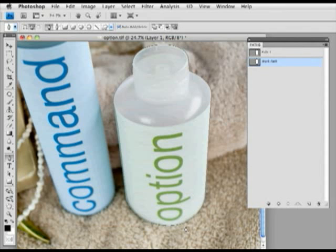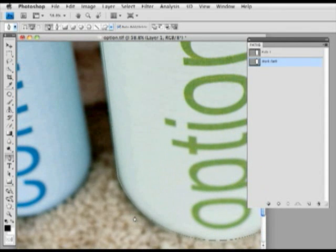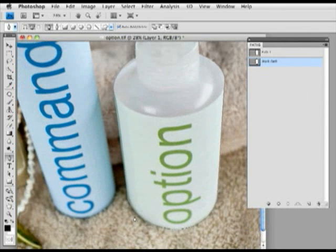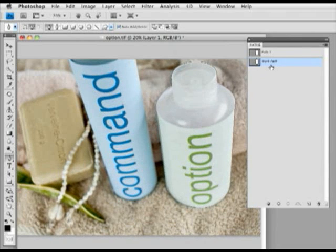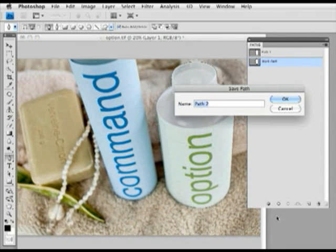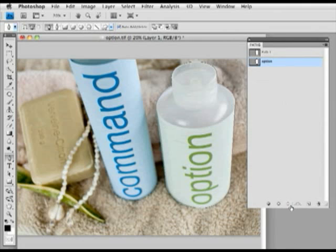But now I'm going to take that path. I'm going to name it. Option. Click OK. And now load it as a selection. So there it is. I have a selection which, you know, I could do all sorts of things with. I could copy it and then move it.